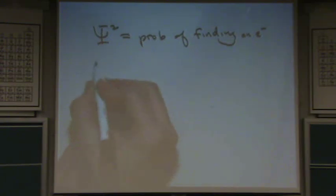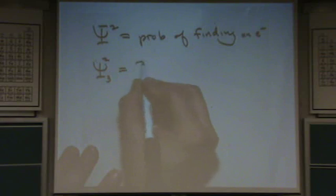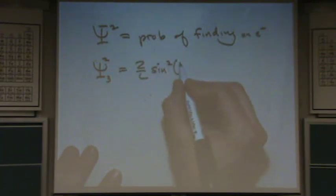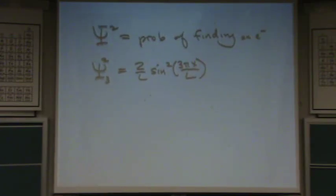So, psi squared, which in the previous example would just be psi 3 squared, which is 2 over L. I'm just squaring it. I'm not simplifying or doing anything to it. Sine squared of 3 pi x over L. That represents, that function right there represents the probability of finding an electron.